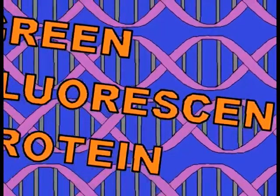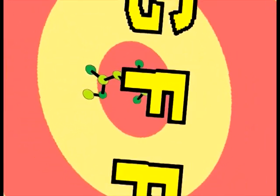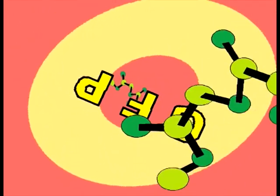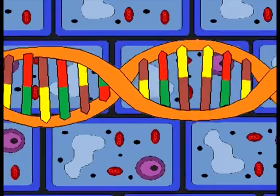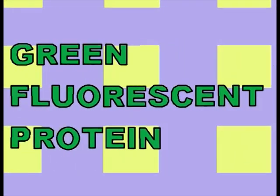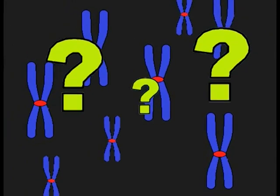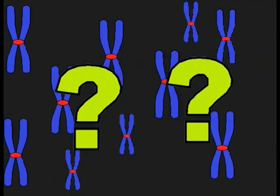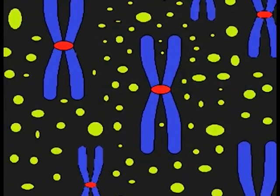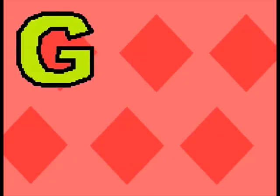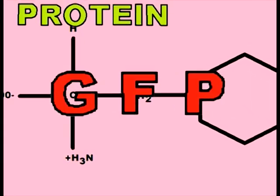GFP, green fluorescent protein. GFP, green fluorescent protein. I want to know if there's expression in this gene — it's powerful to grow, so it can see GFP. GFP, votes for the gene, and it's powerful to grow, so it can see GFP.